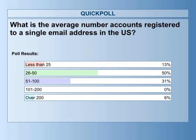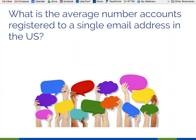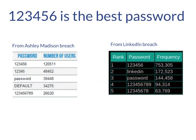The actual answer, according to Dashlane, is 107 accounts registered to a single email address. Keith has over 200. I have about 320 in my LastPass. That's a large number of passwords, and that's part of the problem.